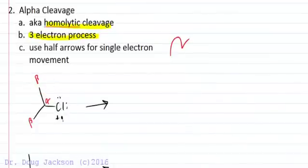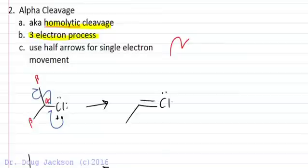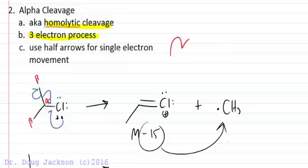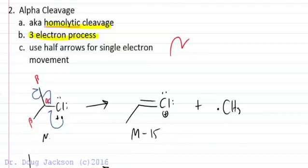So what happens, the radical meets in the middle, one half arrow, one half arrow, and then one radical left over. What do we get? We get a chlorine here with a plus one formal charge and then we get the radical CH3 group left over. This is M minus 15 because the part that we can't see, the methyl, weighs 15. So that part goes away, and if this is the molecular ion, M minus 15 would be an alpha cleavage pathway.